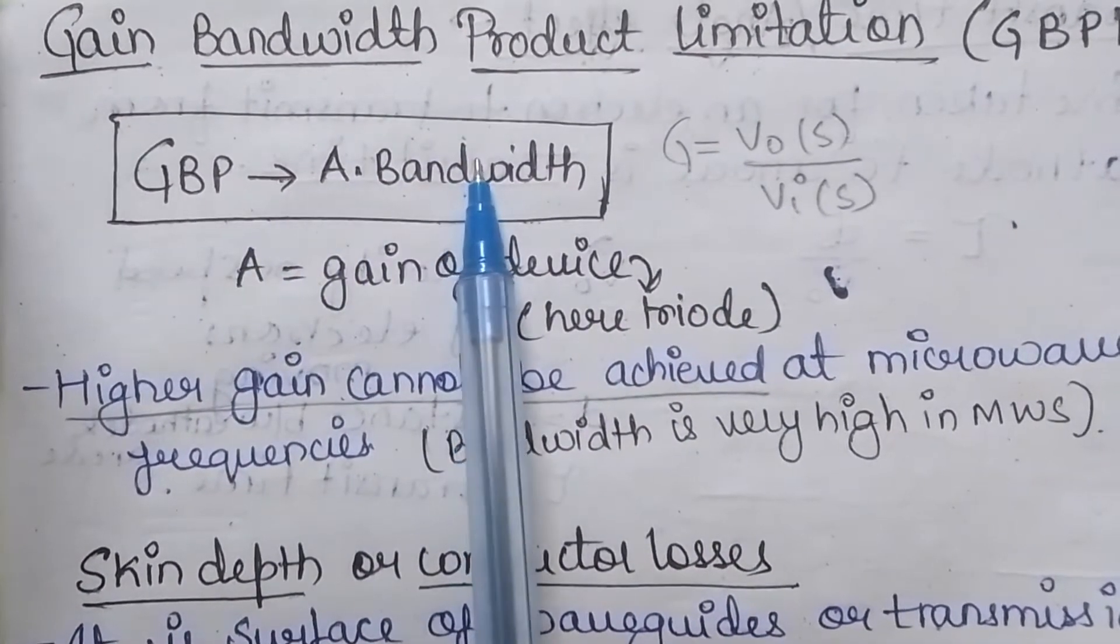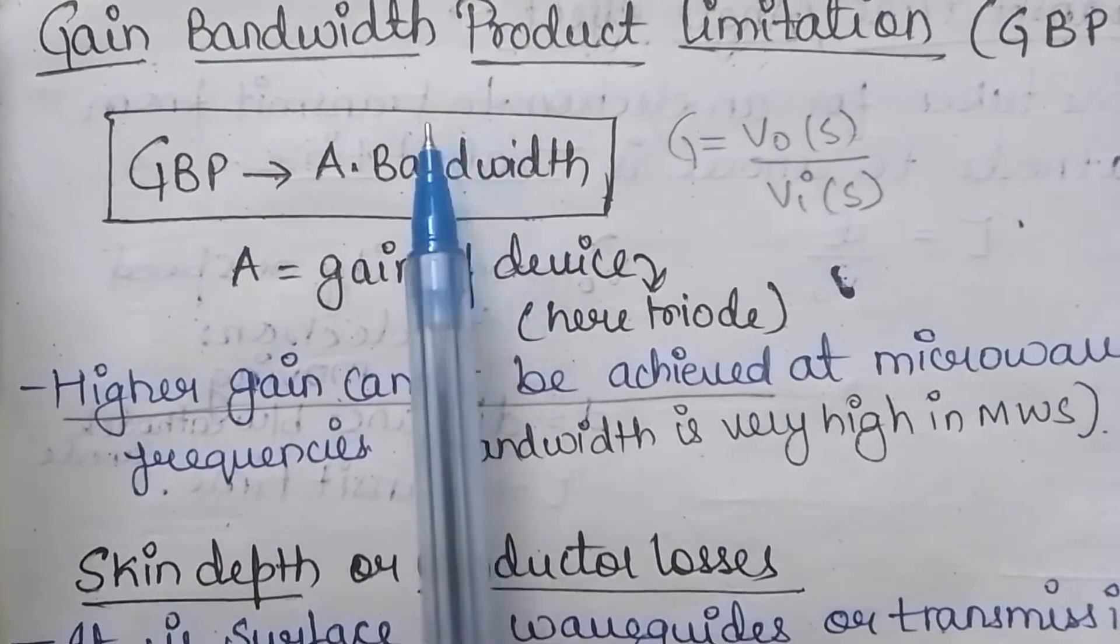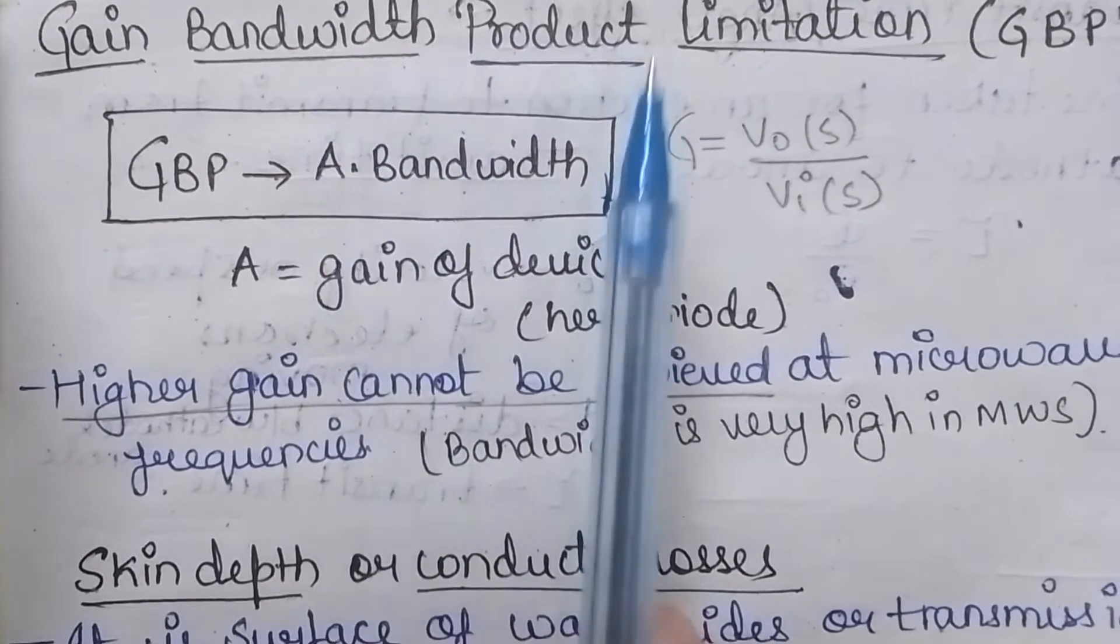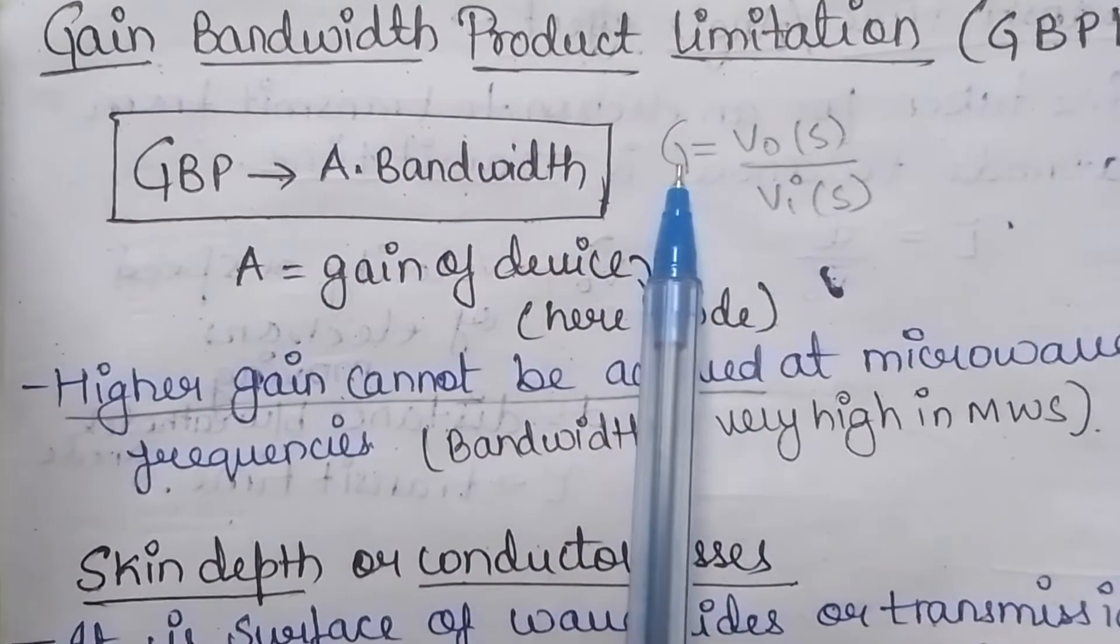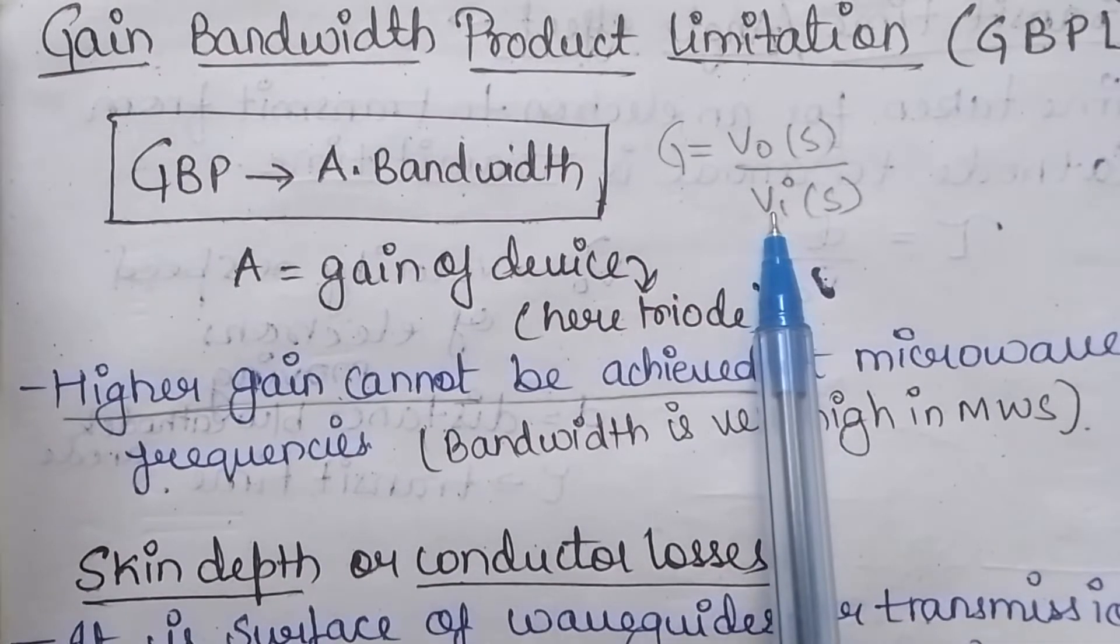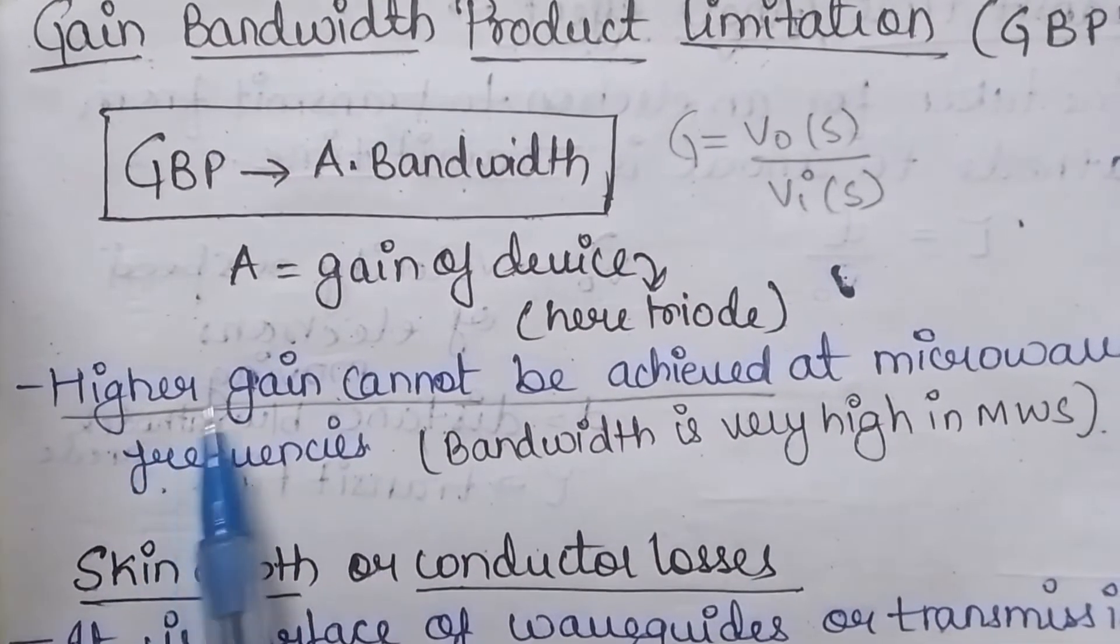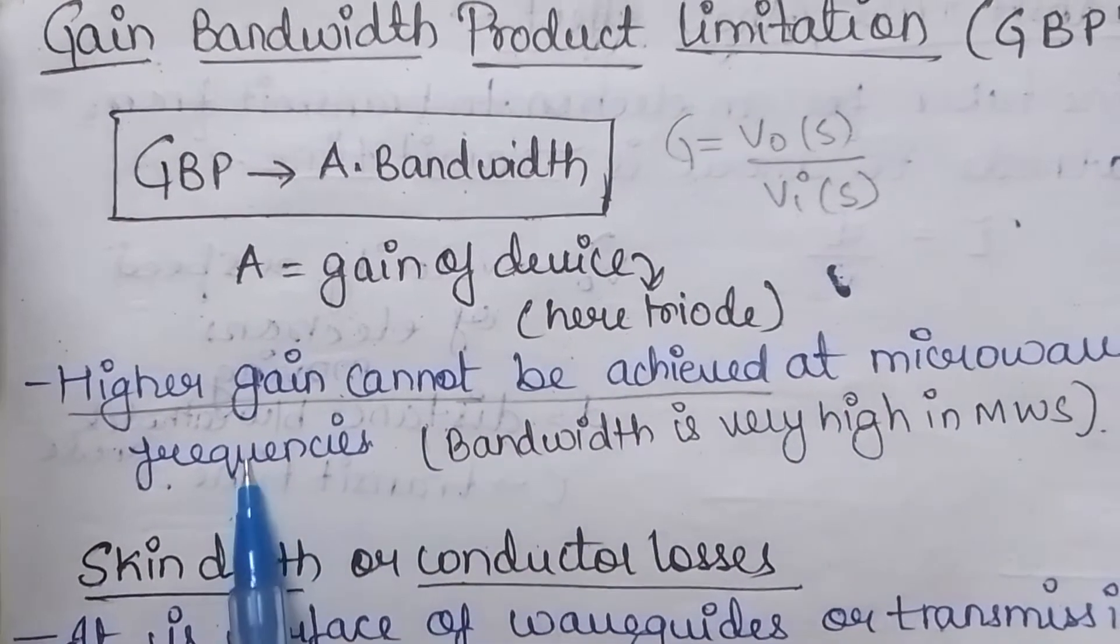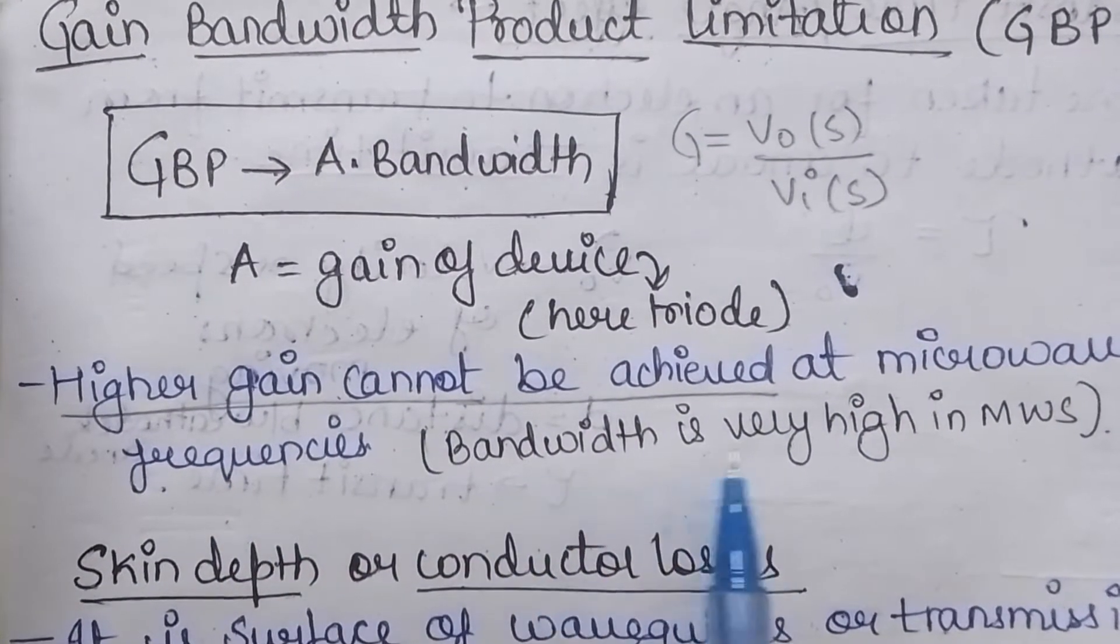And bandwidth can be calculated by the difference between the higher frequency and lower frequency. The gain can be calculated by the output voltage upon input voltage. Here higher gain cannot be achieved at the microwave frequency and bandwidth is very high in the microwave signals.